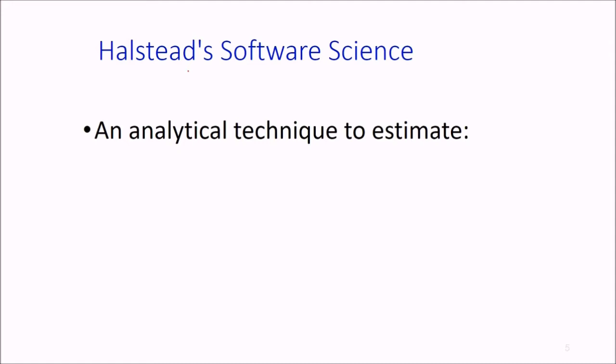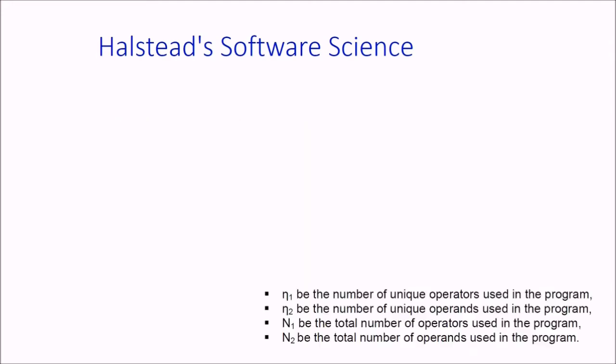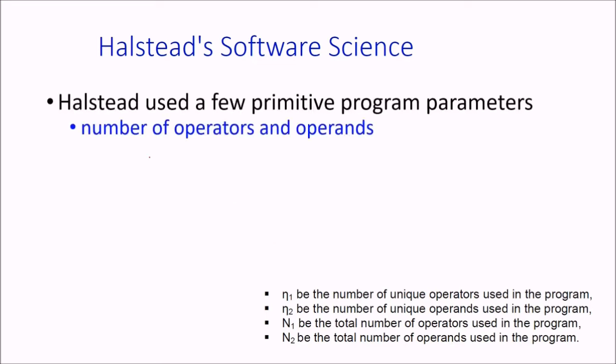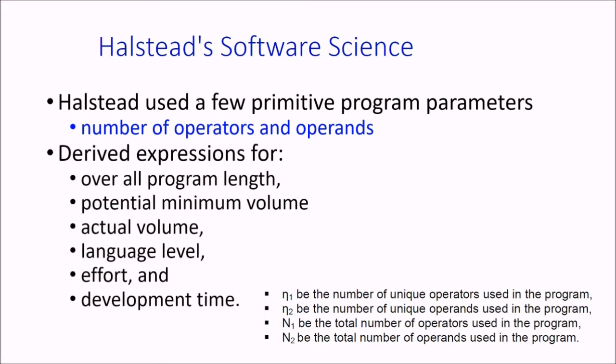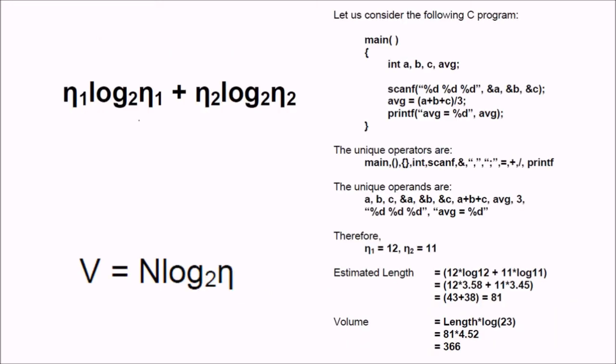Then Halstead, it is an analytical technique he proposed to estimate the size, effort, and time. These are similar to what we've seen in COCOMO, where from size they computed effort and time. So these are the values he has proposed. His primitive program parameters are: number of operators and operands. We can have derived expressions for overall program length, the potential minimum volume, actual volume, the language level, the effort, and finally the development time.